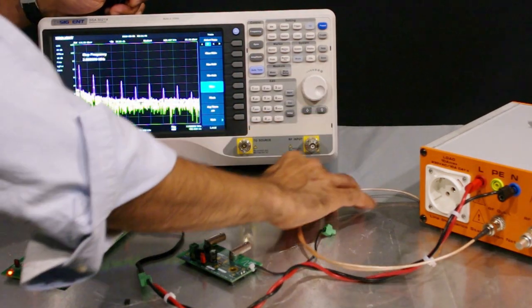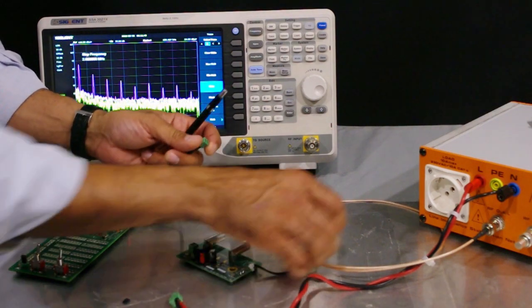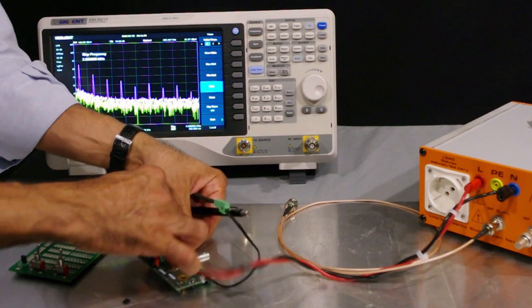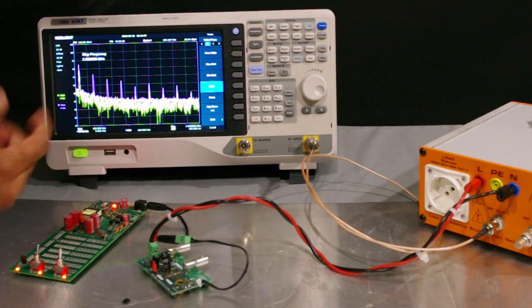I'm going to add this and we'll see how the spectrum changes. Please always take this off so that you don't damage the front end of the spectrum analyzer. Then I'm going to add the filter—this is only a differential mode filter with no common mode filtering.